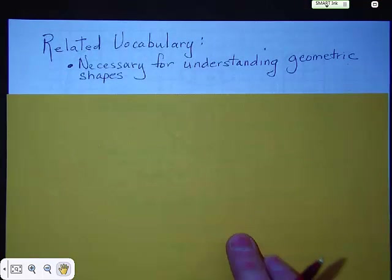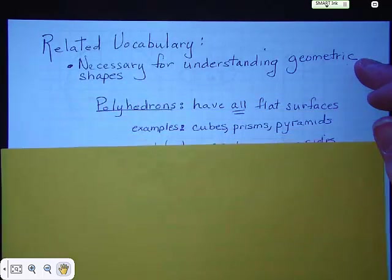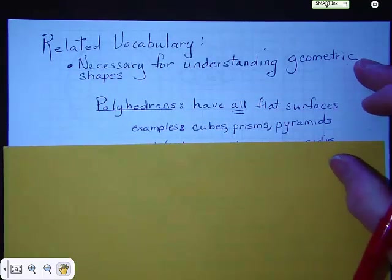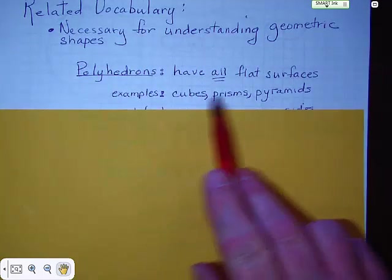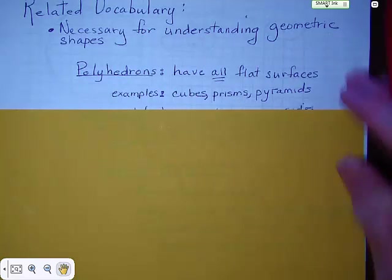Now, we have some kind of related vocabulary that's kind of necessary for understanding geometric shapes. Get your pencil ready because there's a little bit to write here. We have polyhedrons. Polyhedrons have all flat surfaces, cubes, prisms, pyramids.